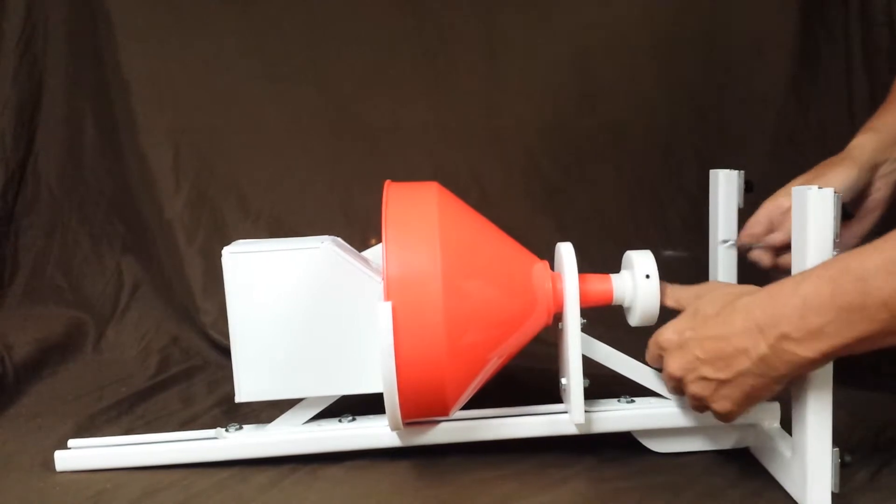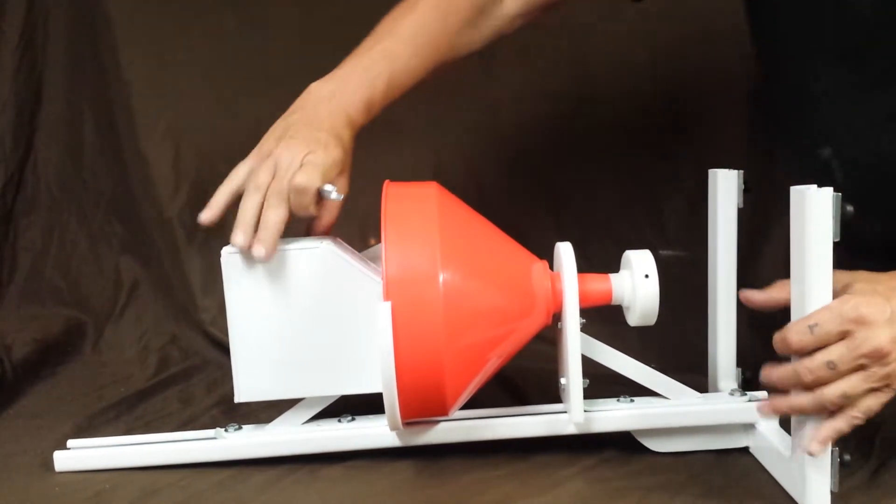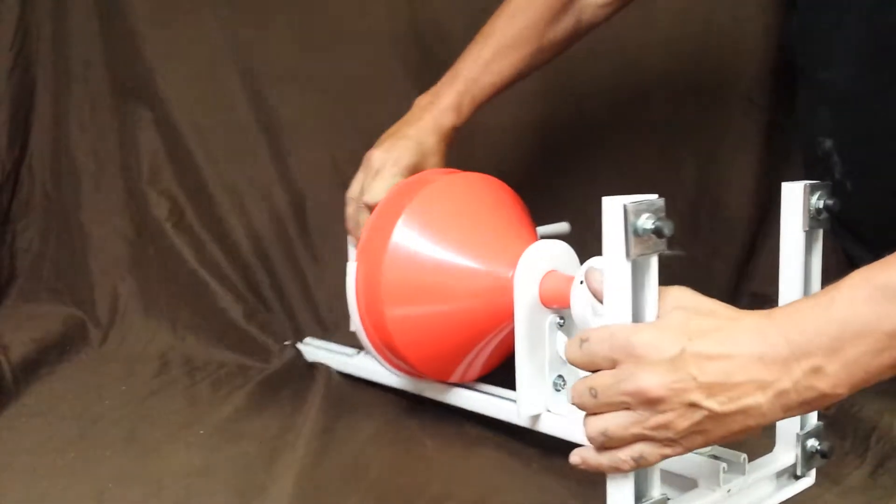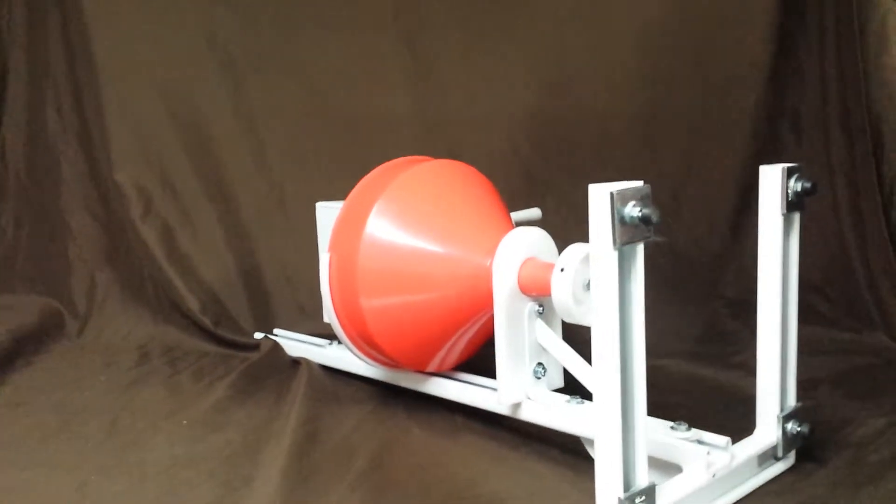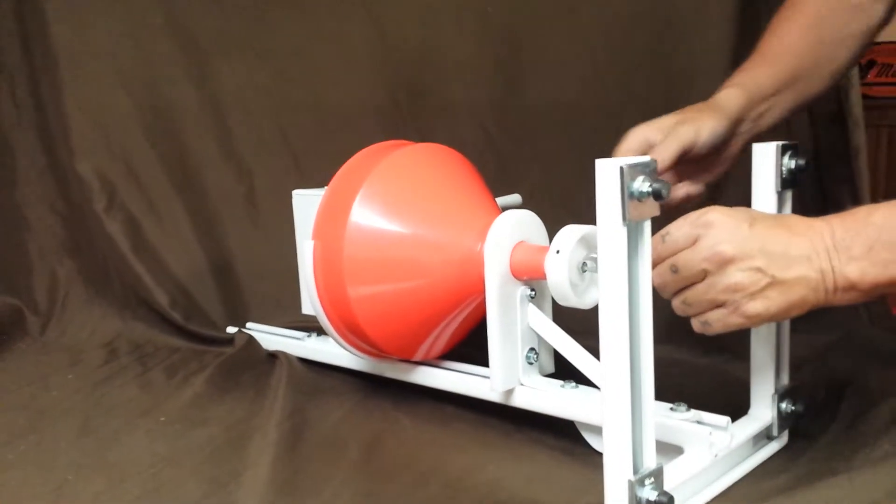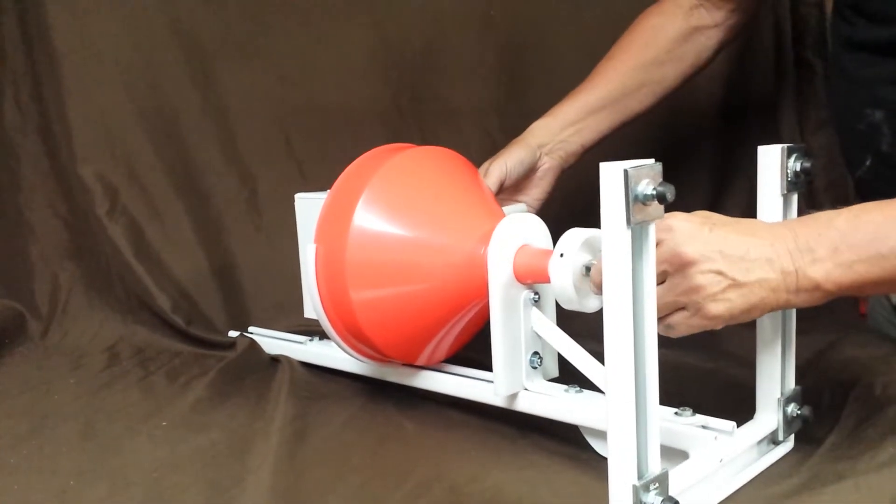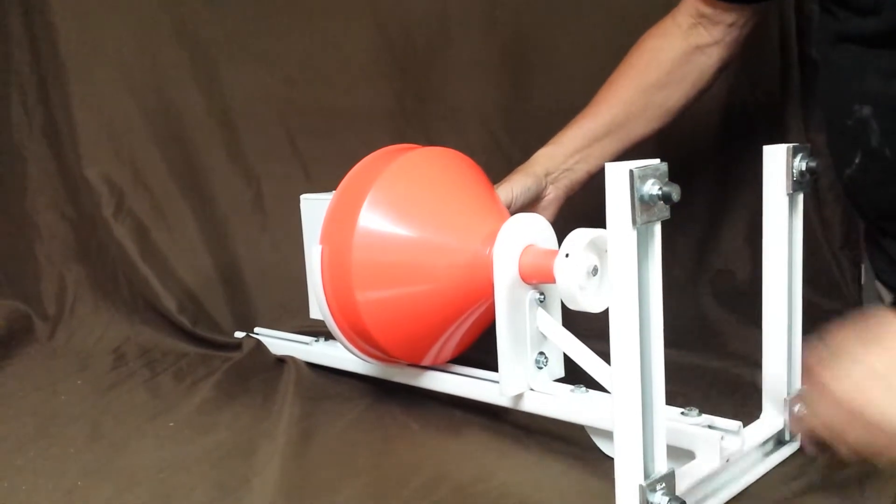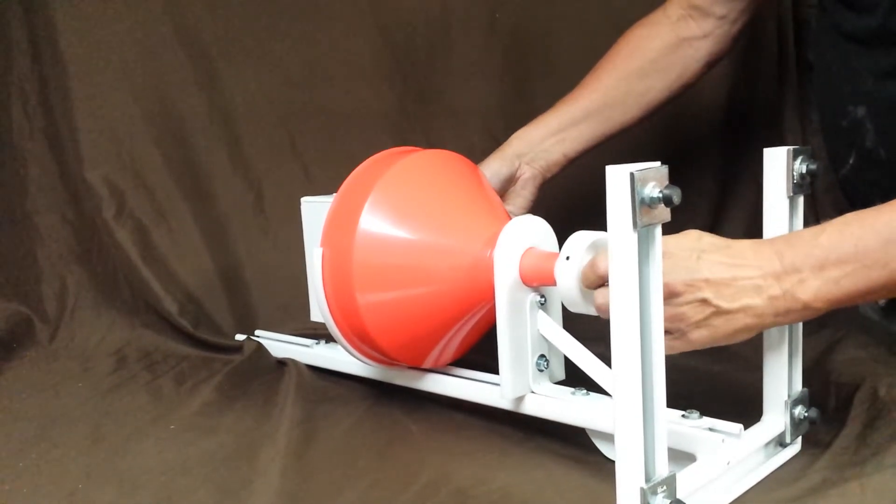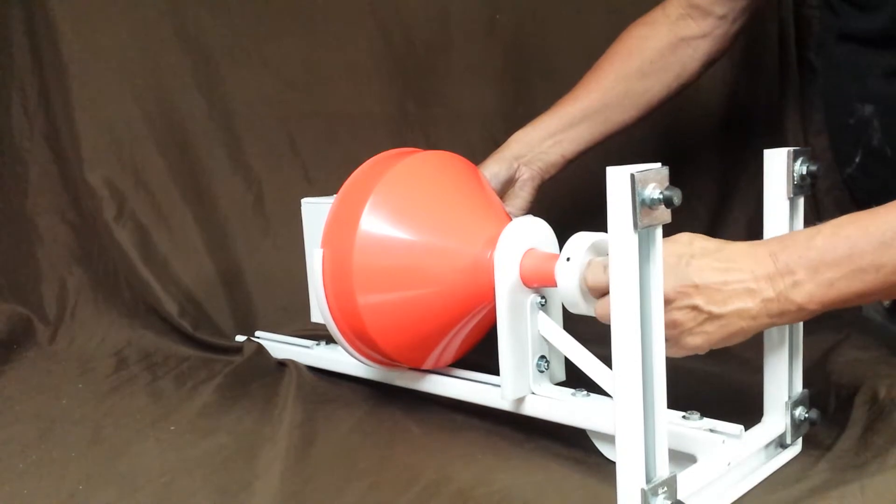Take a 7/16th wrench and on the base of this funnel, you will see what we call a spinner plate and there's a nut there. Loosen that nut, holding the handle so that the auger doesn't turn.